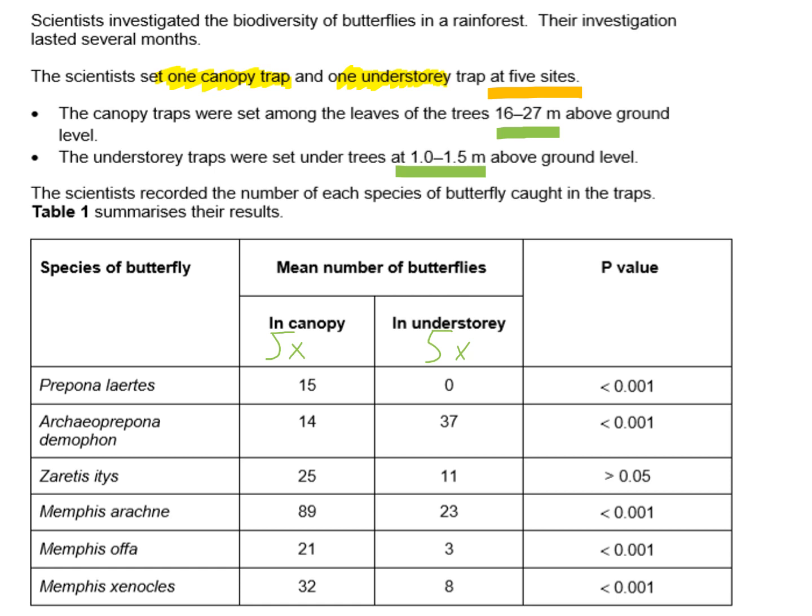Looking at the species names, we can see the binomial Latin nomenclature — the first word is the genus (e.g. Propona) and the second is the species name (e.g. lertes). There are 6 different species of butterfly identified across the traps. From these data values we can work out the index of diversity for each area. The table also includes p-values from a t-test to assess whether differences in mean butterfly numbers are significant.